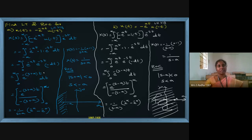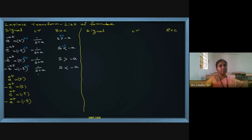We done one problem — the b option — where the Laplace transform denominator will be s minus a. Whenever e^(+at) is there, denominator is s minus a; whenever e^(-at) is there, denominator is s plus a. So based on this, the Laplace transform is 1 by (s minus a) for all four signals.